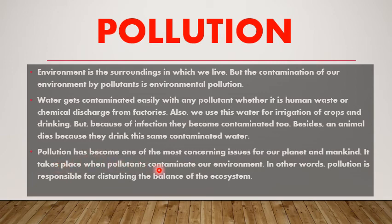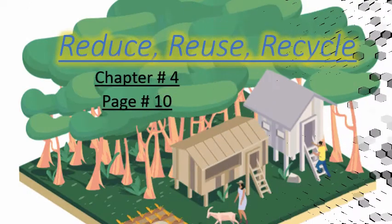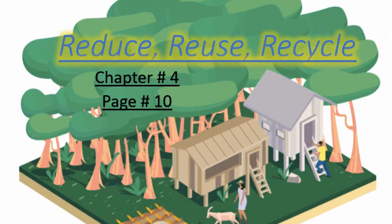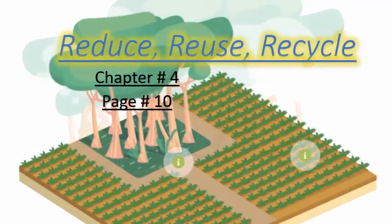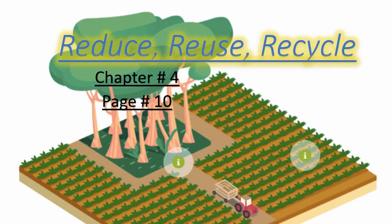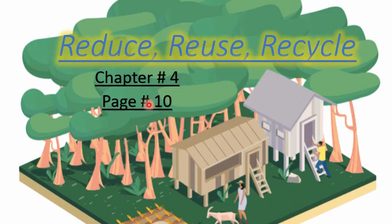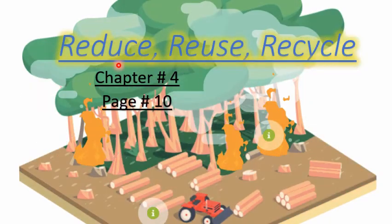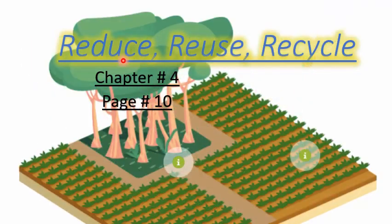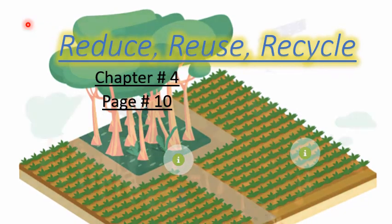Pollution disturbs the balance of the ecosystem — the environment in which both biotic and abiotic factors, meaning living and non-living things, interact with each other. You can observe in the background how the natural environment can be destroyed by pollution. Due to this, the three R's were introduced: reduce, reuse, and recycle. This is chapter four, on page ten of your social studies book, and we will review these three terminologies one by one.